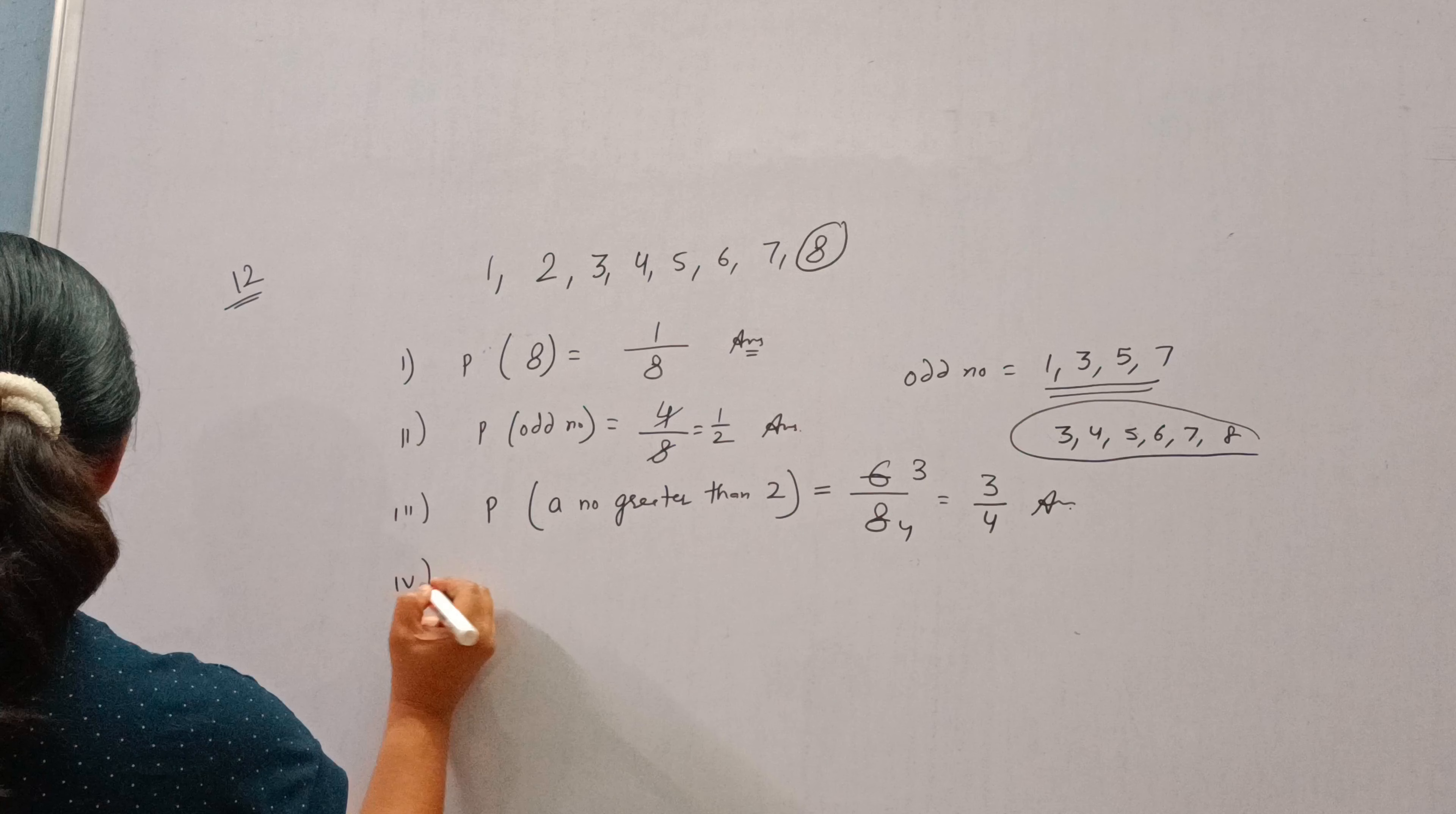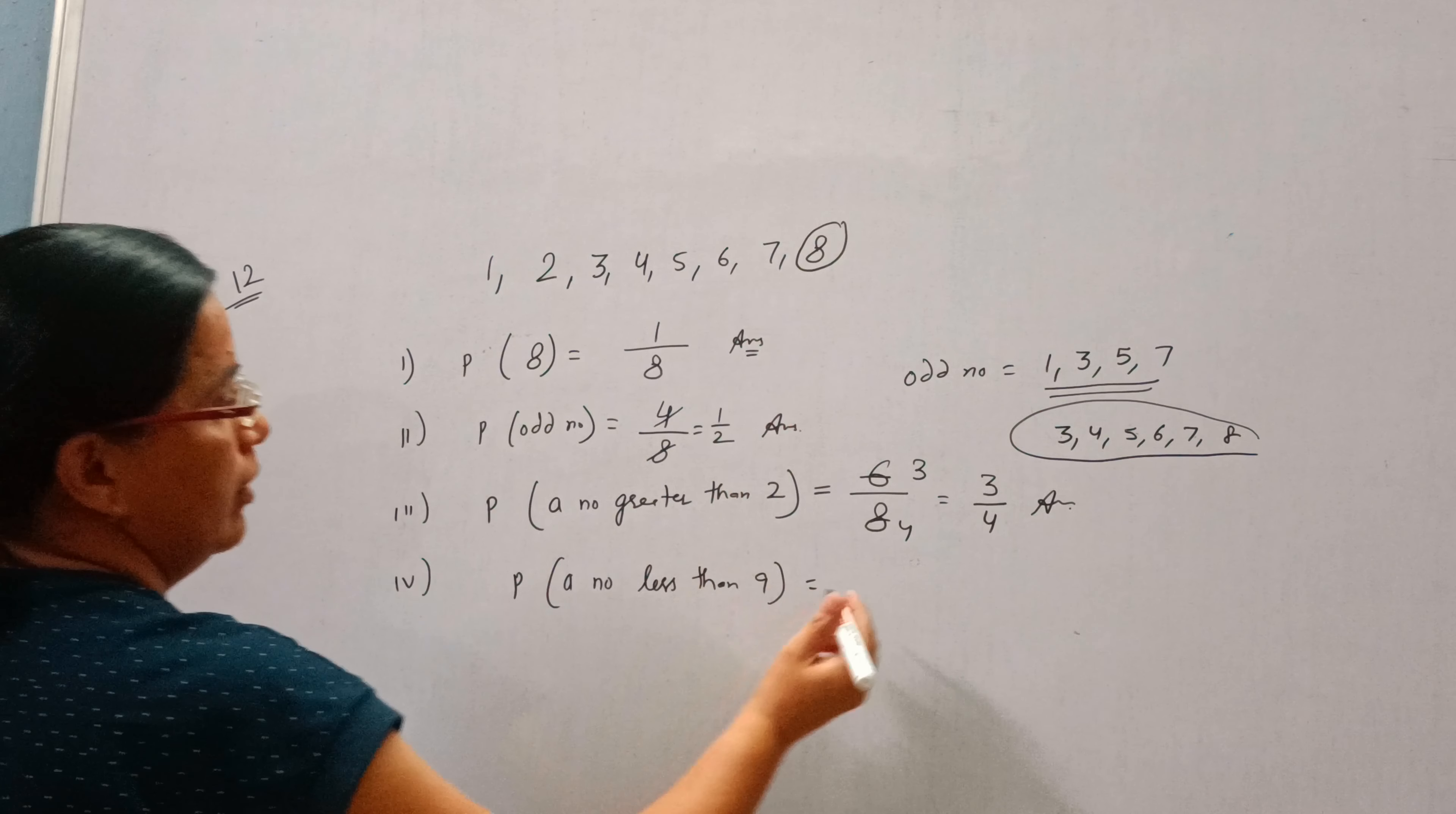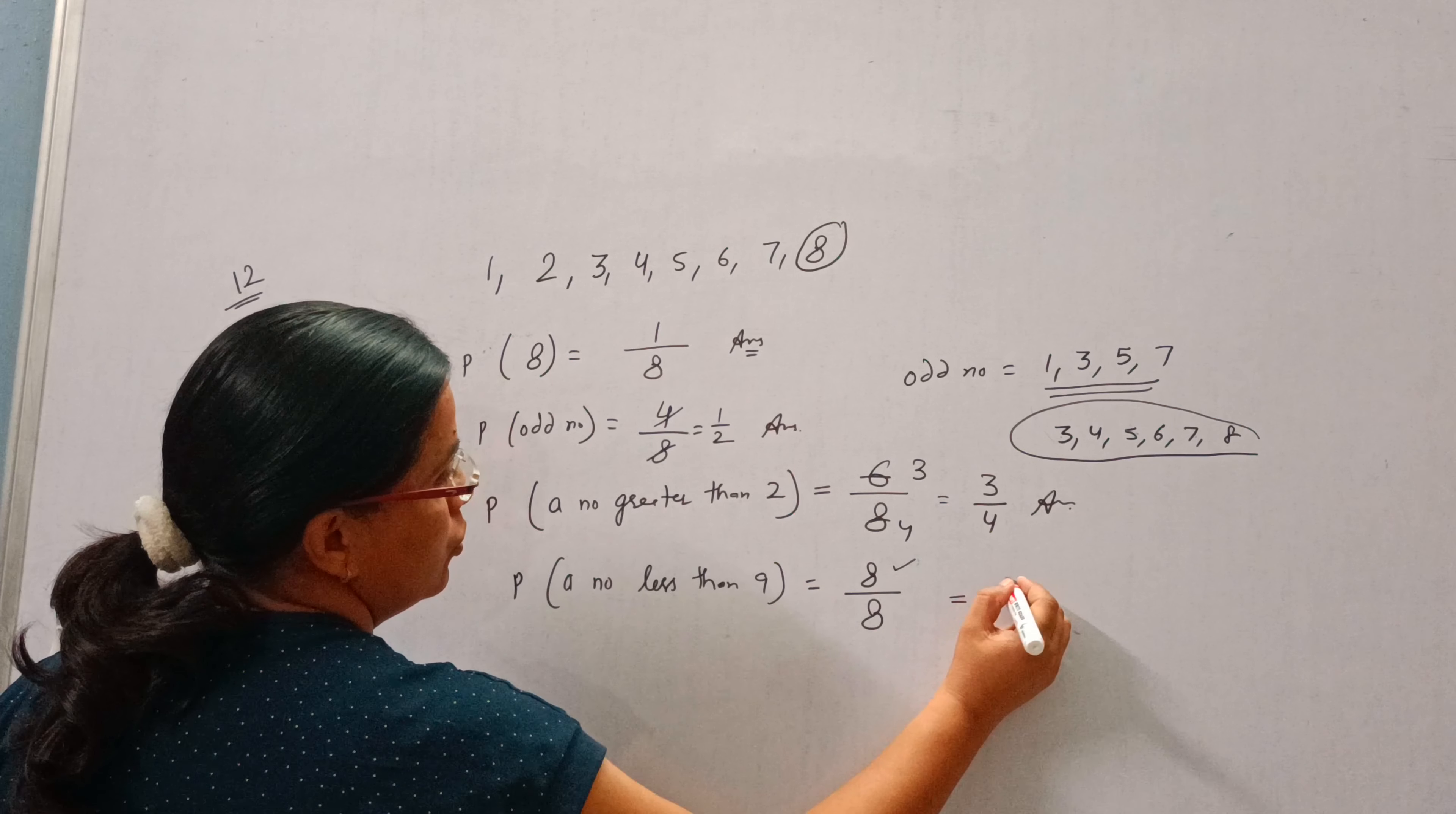Fourth, a number less than 9. All the numbers are less than 9, so it is a sure event and the probability is 8 by 8. Because total 8 numbers are less than 9 and total number is also 8, so answer is 1.